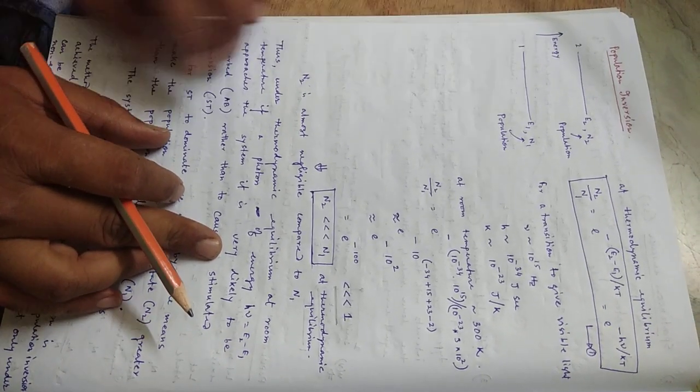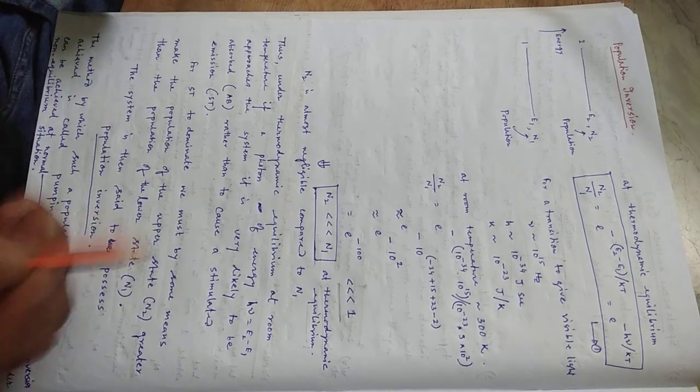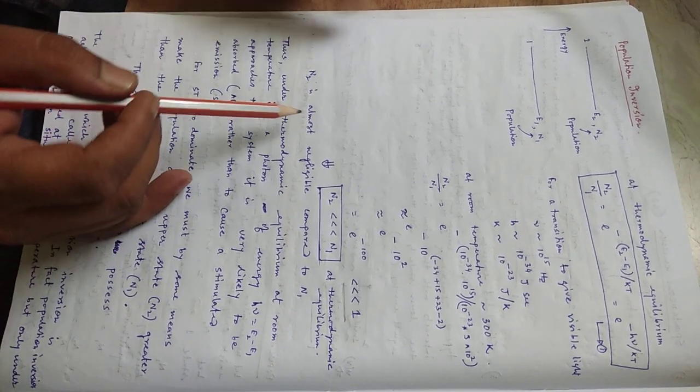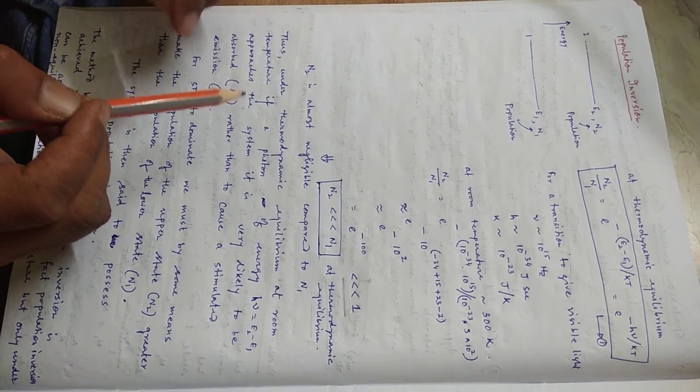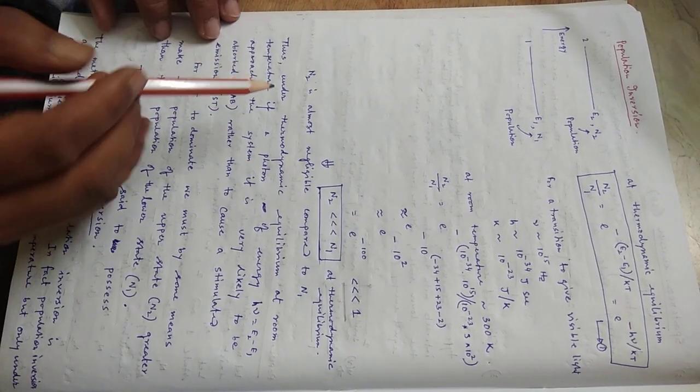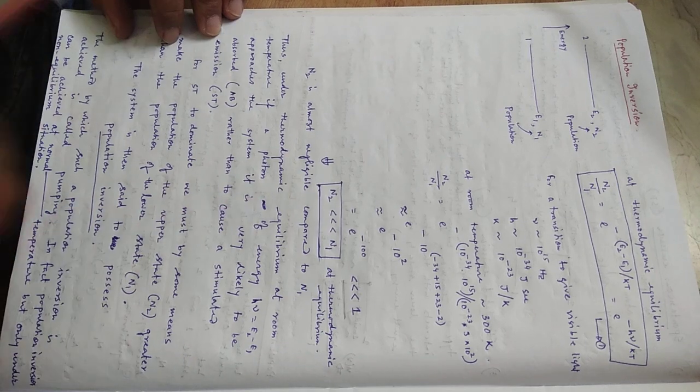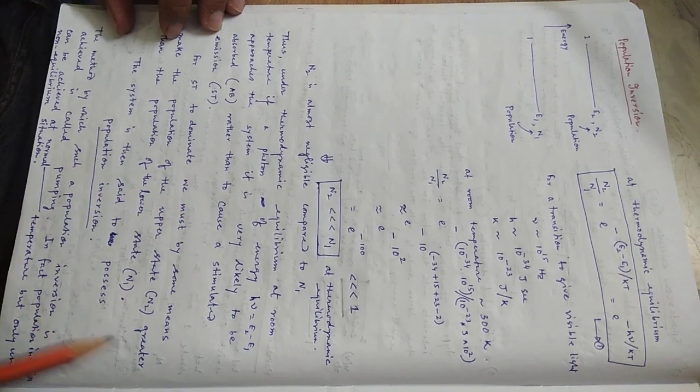So if a photon of energy H nu approaches an atom, basically the probability of that particular photon to be absorbed in that atom, that means the probability for a stimulated absorption to happen will be much much larger than the probability of stimulated emission.